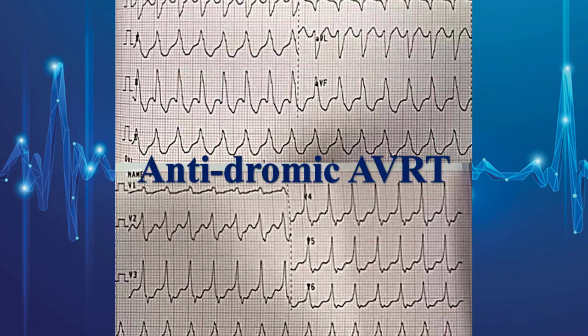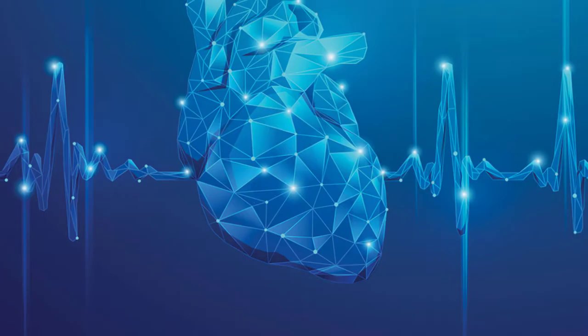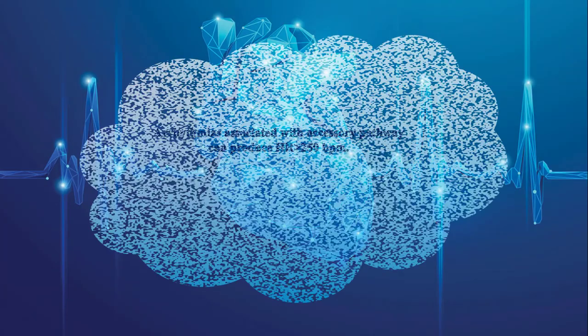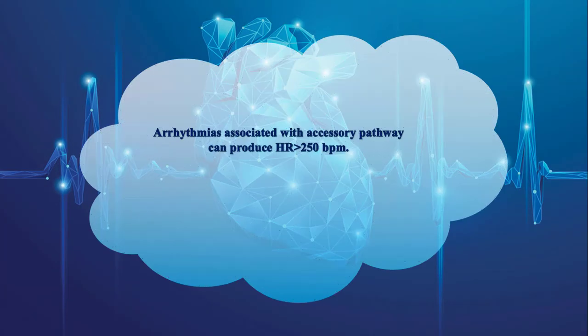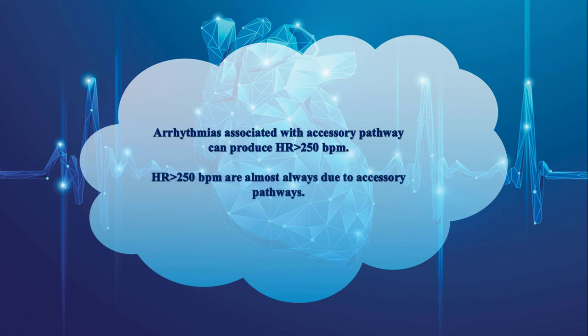Remember one important note: arrhythmias associated with an accessory pathway, like AVRT and pre-excited AF, can produce heart rates higher than 250 beats per minute. In other words, heart rates greater than 250 beats per minute are almost always due to an accessory pathway, whether you see a delta wave or not.